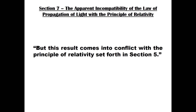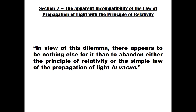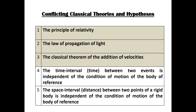Einstein confirms this conclusion. At this point, we can summarise where we are with regard to our five classical theories and hypotheses. Einstein has already said that the theorem of the addition of velocities employed in classical mechanics cannot be maintained. And now, in view of this dilemma, there appears to be nothing else for it than to abandon either the principle of relativity or the simple law of the propagation of light in vacuum. It appears that at least three of our list of five theories and hypotheses are under severe challenge. Before reaching a resolution, Einstein needs one further thought experiment, looking at simultaneous events, which we will discuss in our next video.